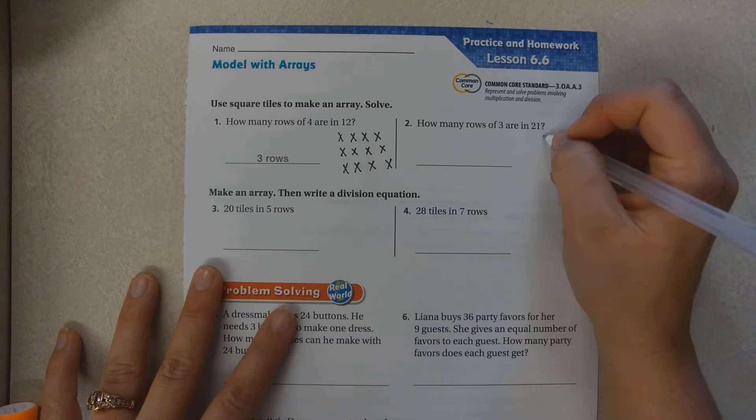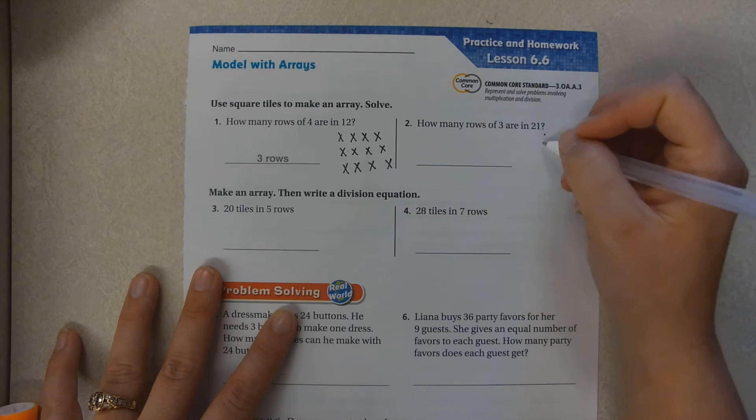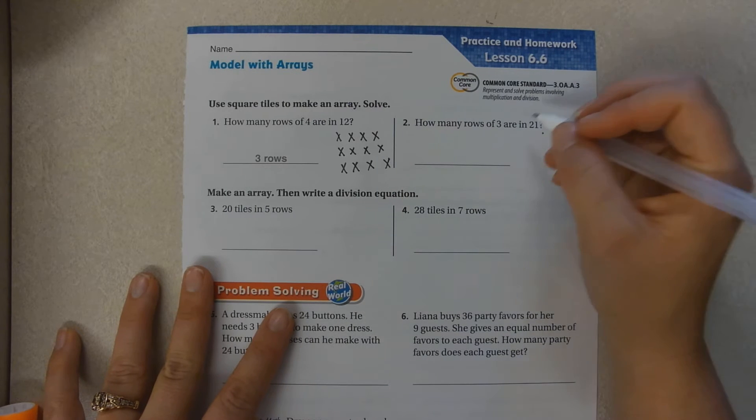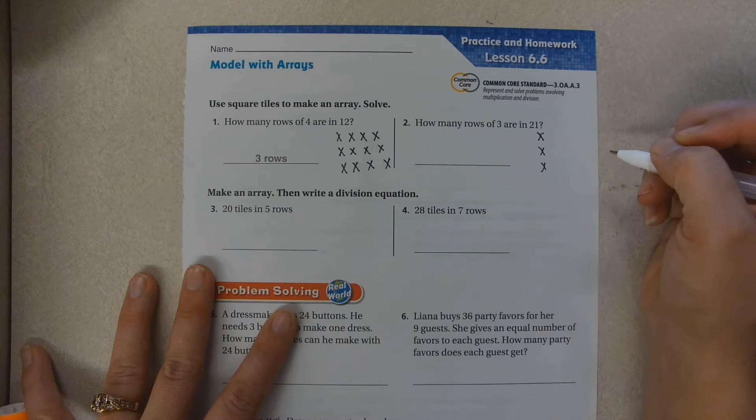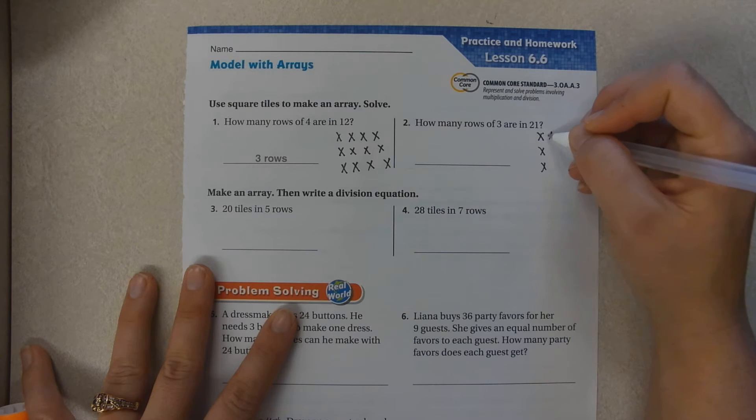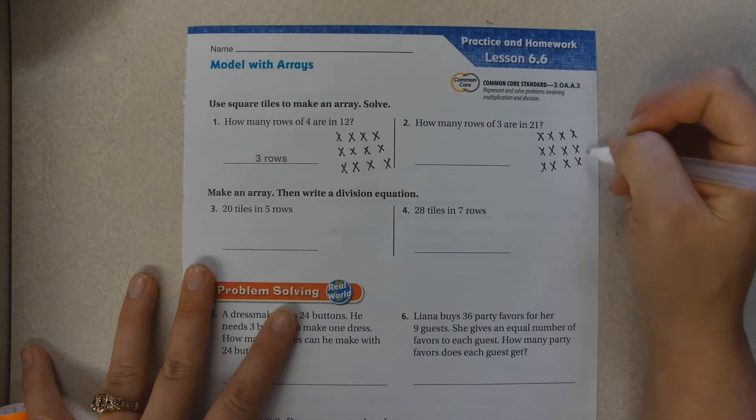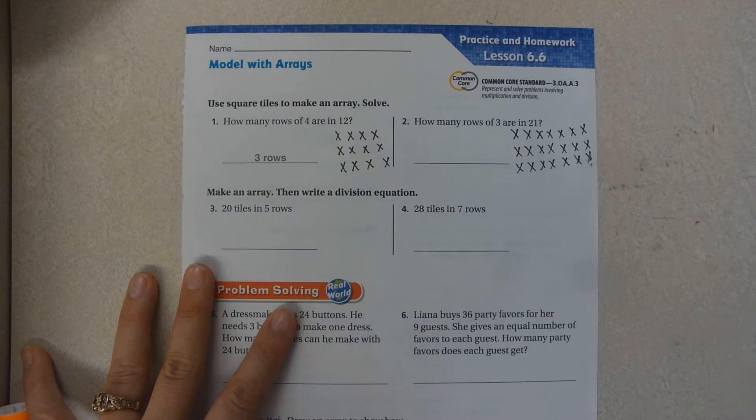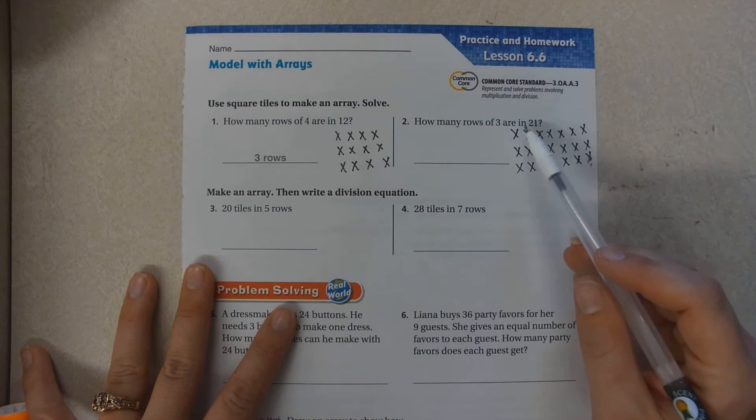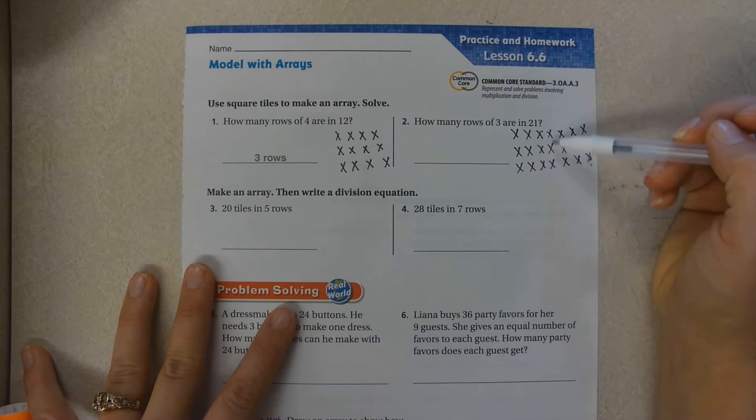We can do it this way or this way. I know it says rows but we're not really that picky. So one, two, three, four, five, six, seven, eight, nine, ten, eleven, twelve, thirteen, fourteen, fifteen, sixteen, seventeen, eighteen, nineteen, twenty, twenty-one. So how many groups do we have of three? One, two, three, four, five, six, seven.